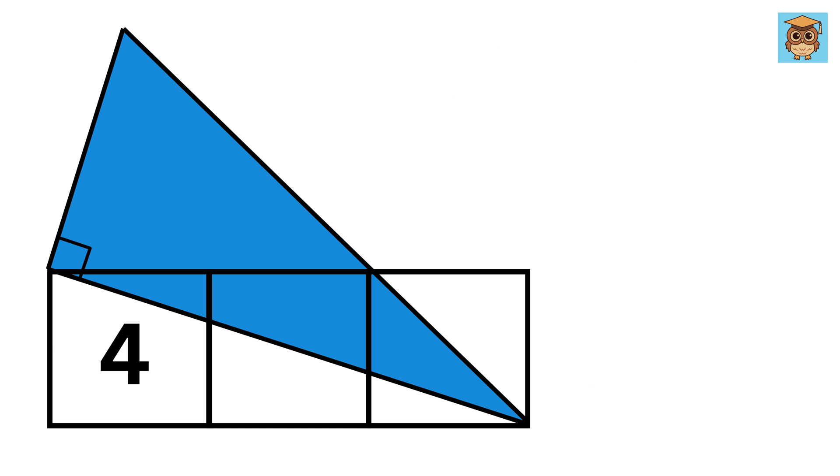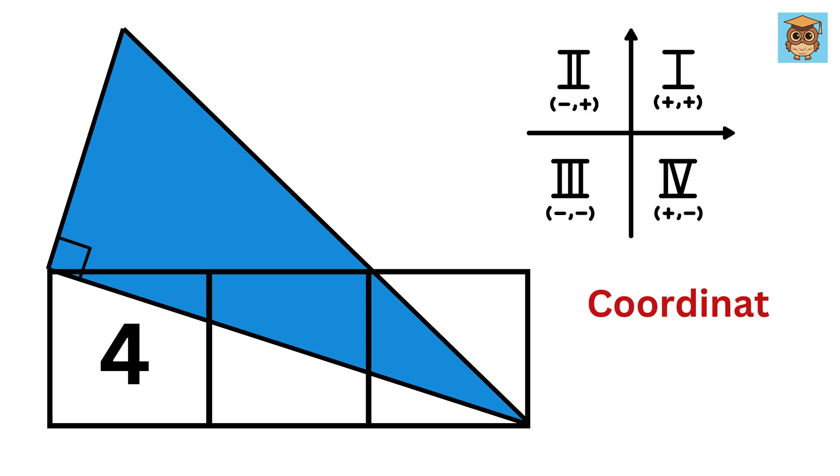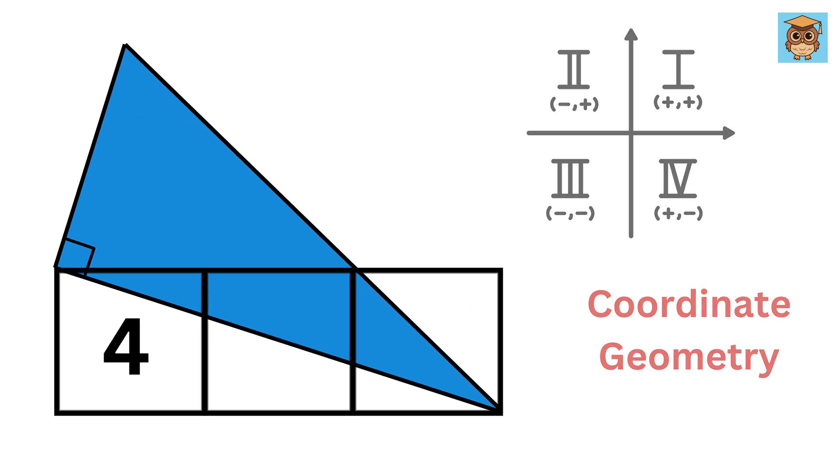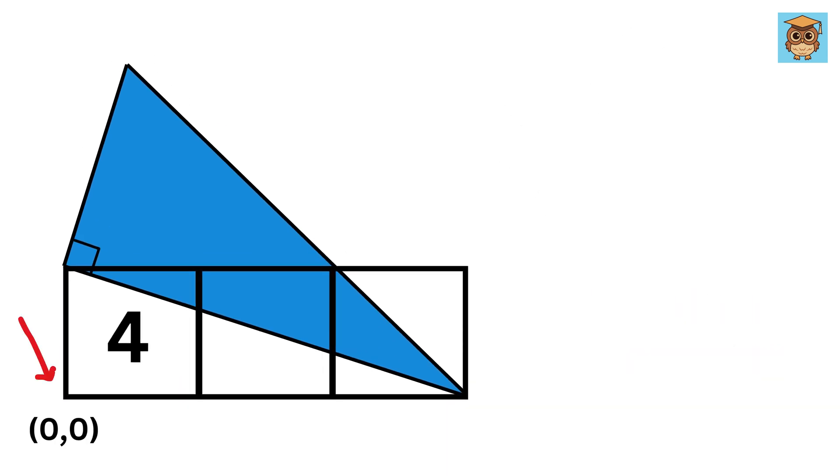The one I have chosen is using coordinate geometry. It will make the problem much simpler and intuitive. Let us define this point as the origin of our coordinate system. Now since the area of all of these squares is four square units, therefore the length of each square will be two units.